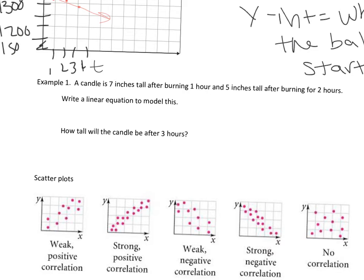Number 1: A candle is 7 inches tall after burning 1 hour, and 5 inches tall after burning 2 hours. We don't have an initial height or slope right away, and the y-intercept isn't obvious. But we do have 2 points — 2 ordered pairs.